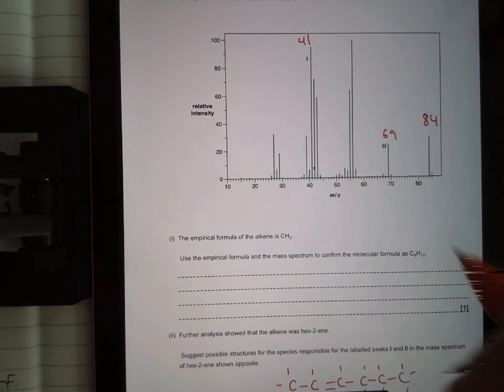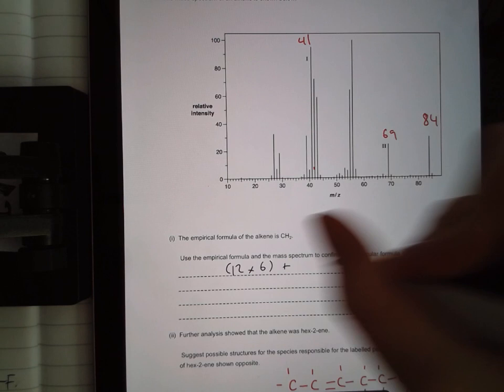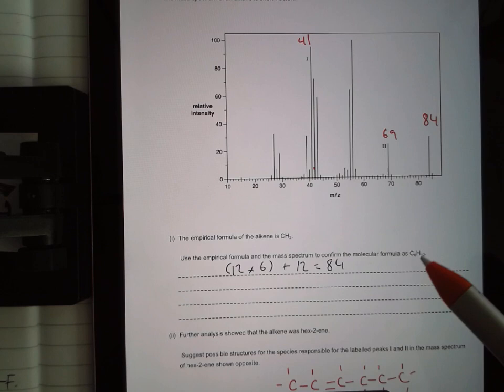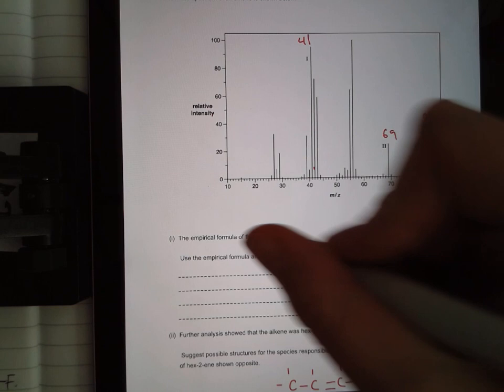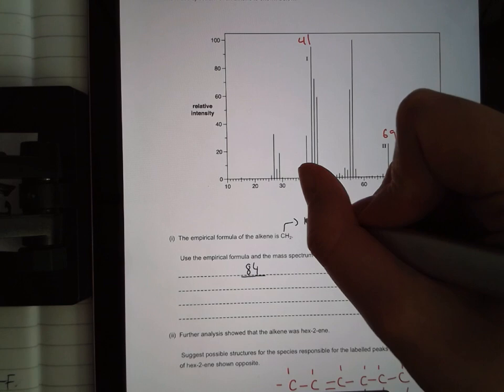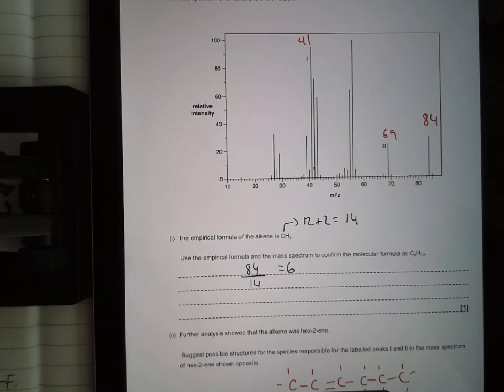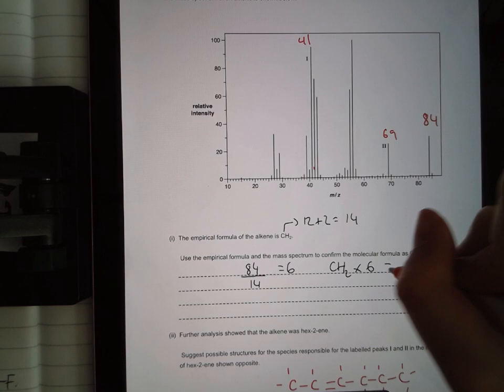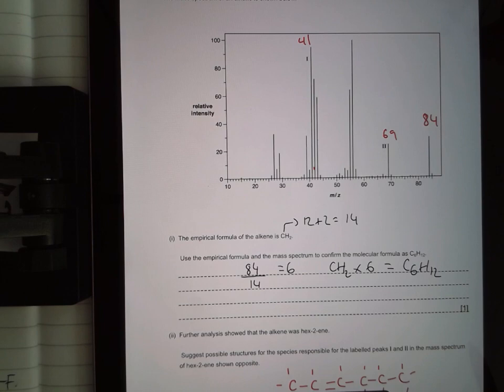So just working out, if you just did 12 times 6 plus 12 equals 84, you don't get the mark. That's you just showing that if you work out the formula mass of your molecular formula, the answer is 84. They want you to use the empirical formula, so what you have to do is take your molecular mass, which is 84 from the mass spec, and divide that by the molecular mass of the empirical formula. So CH2 would be 12 plus 2 equals 14. 84 divided by 14 is 6, and then take your empirical formula CH2 and multiply that by 6 and you get C6H12.